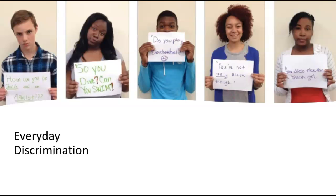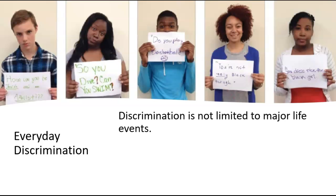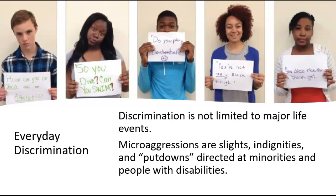In addition to institutionalized discrimination, there's regular everyday discrimination that people in groups facing prejudice deal with every single day. We need to think about more than just big-picture issues like housing, employment, and education, but also what are sometimes called microaggressions — and not just tiny, but bigger forms of discrimination that hit individuals on a very regular basis. Social psychologists define microaggressions in terms of everyday slights, put-downs, and indignities that people experience regularly.